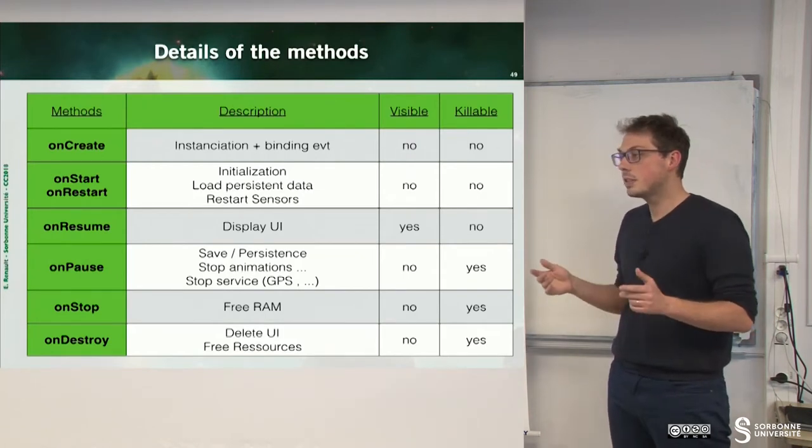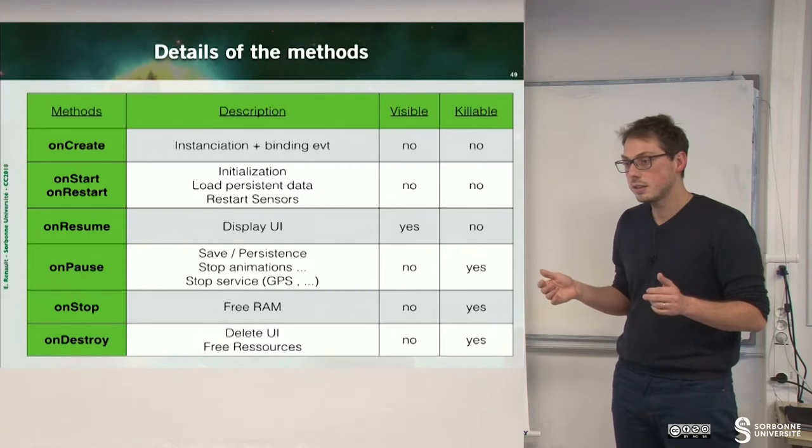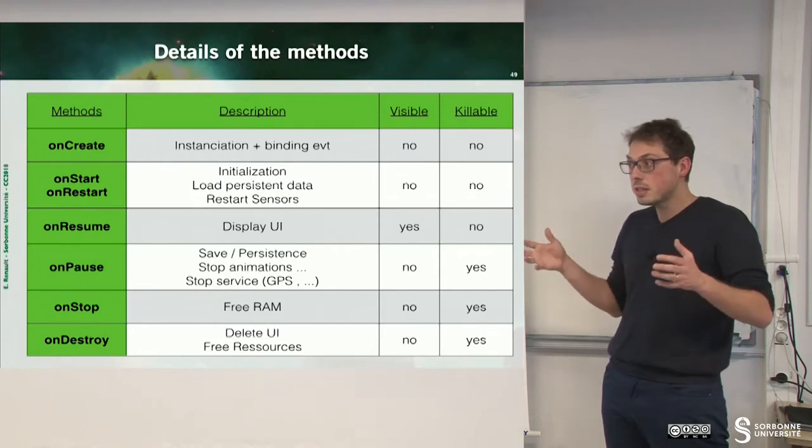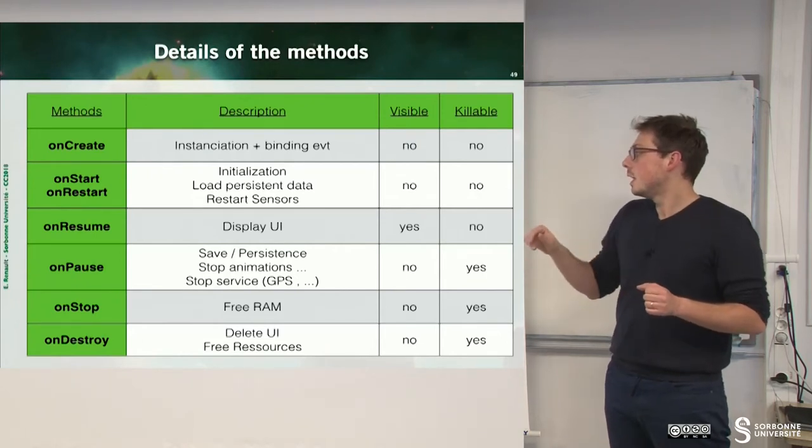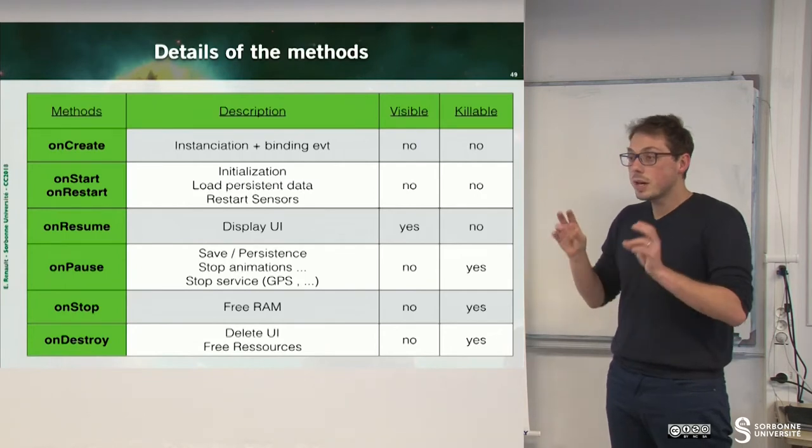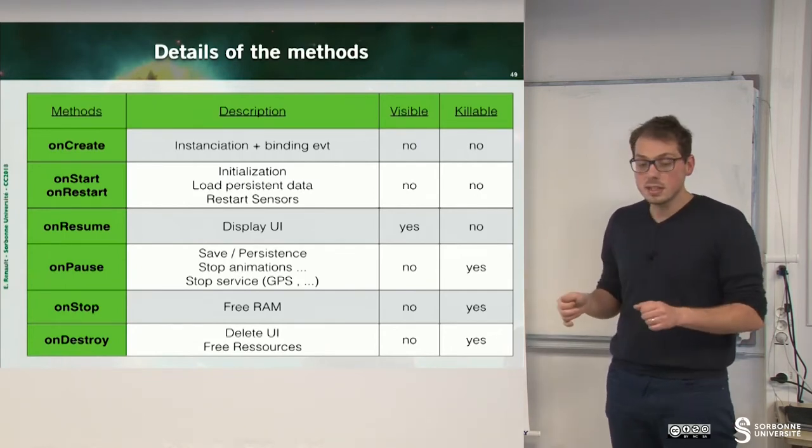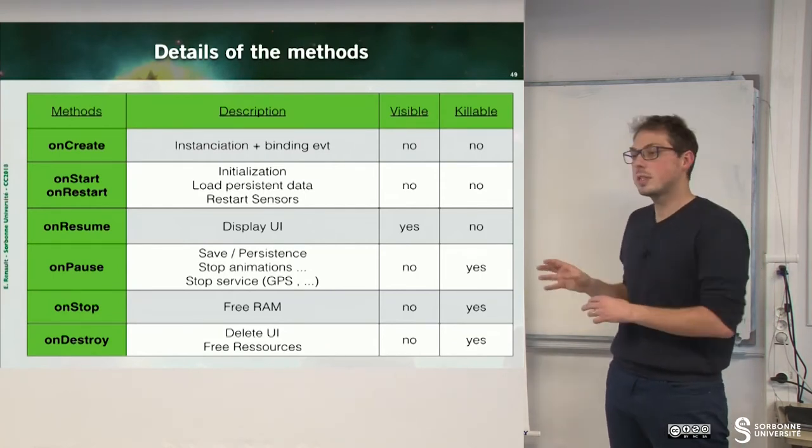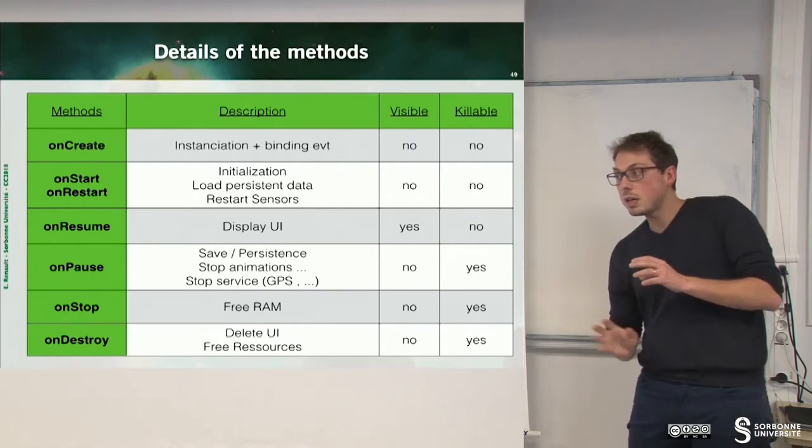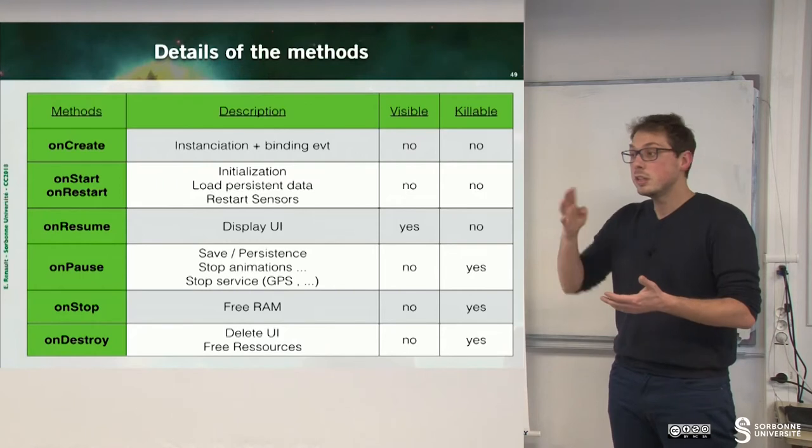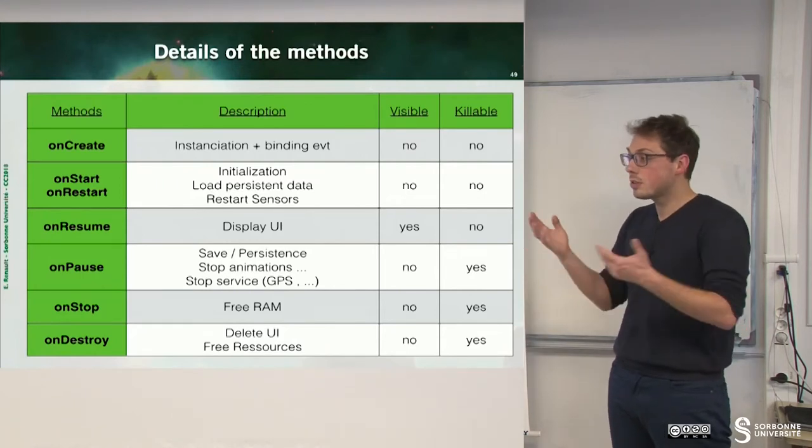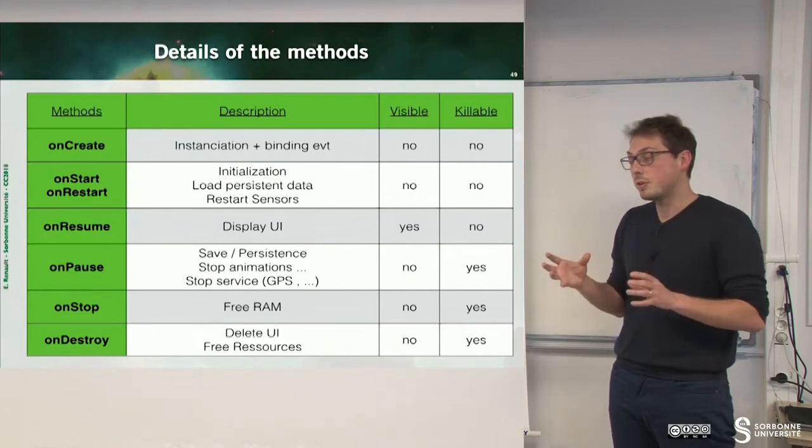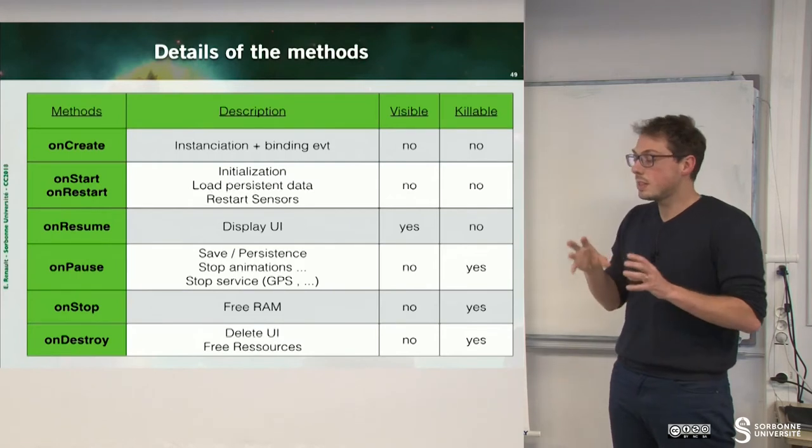Then, onResume, you can display the GUI. From this point, your application is visible. It displays on the screen. Then, you can pause your application. This is where you have to save, to perform persistence, to stop animation, to stop services. You are not forced to do that. But, since your application is going to background, because you received an email, you replied to a text or something, you have to save memory and save energy of your phone. This is where you have to save these things.